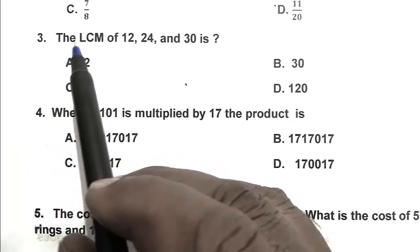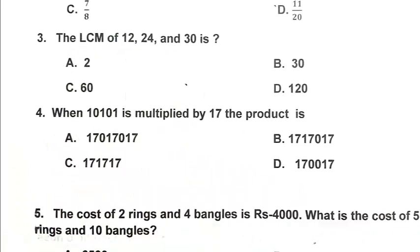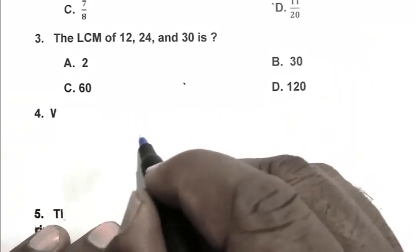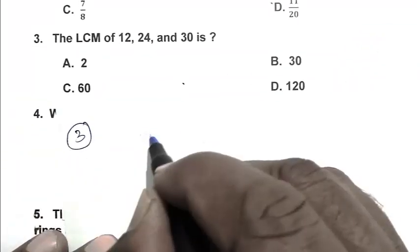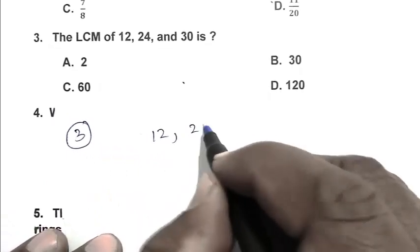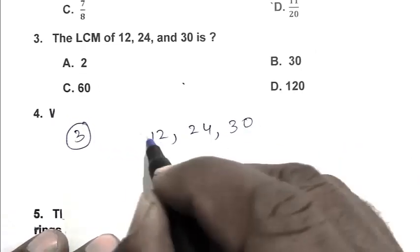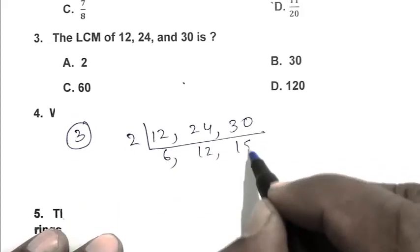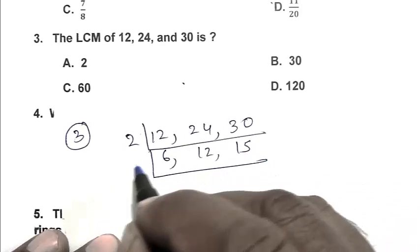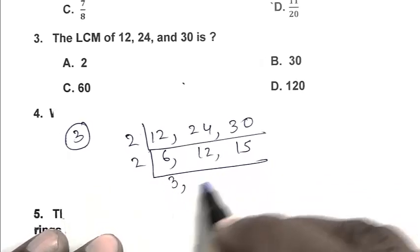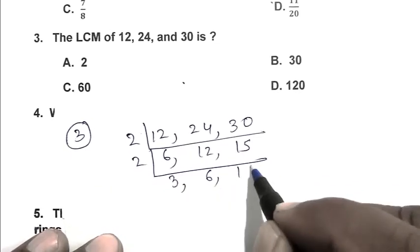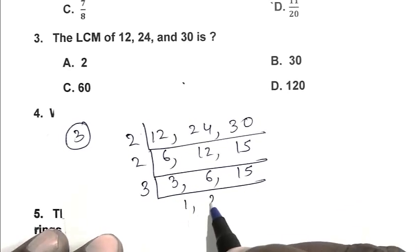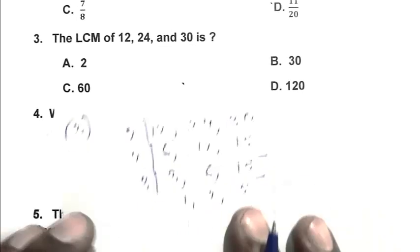Question number 3. The LCM of 12, 24 and 30 is. So we have 12, 24, 30. First, 2 times gives us 6, 12, 15. Again, 2 gives us 3, 6, 15. Then 3 gives us 1, 2, 5.